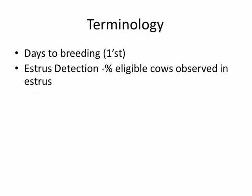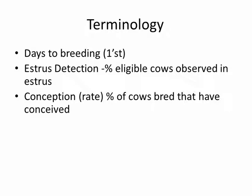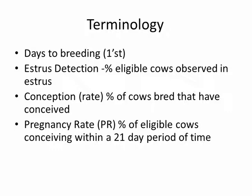Conception rate: what percent of cows bred have conceived? So if we look at a population of the cows that have been inseminated, what number of those are indeed pregnant? And lastly, pregnancy rate, sometimes abbreviated as PRE-R, is the percent of eligible cows conceiving within a 21-day period of time.